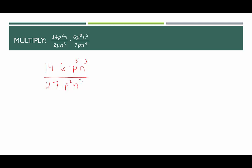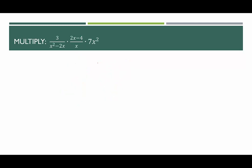Now looking for common factors: 2 times 7 is 14, which cancels with the 14 in the numerator. I have five factors of p in the numerator and two in the denominator, leaving three factors of p in the numerator. I have three factors of n in the numerator and seven in the denominator, leaving four in the denominator. Multiplying across: 1 times 6 times p³ is 6p³, and in the denominator the only remaining factor is n⁴, giving a final product of 6p³ over n⁴.